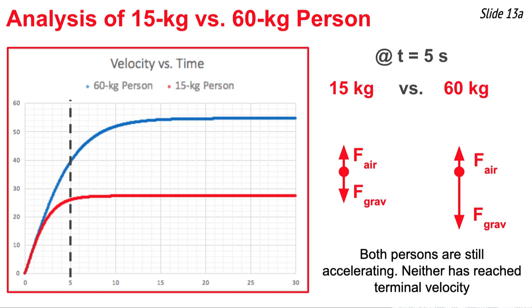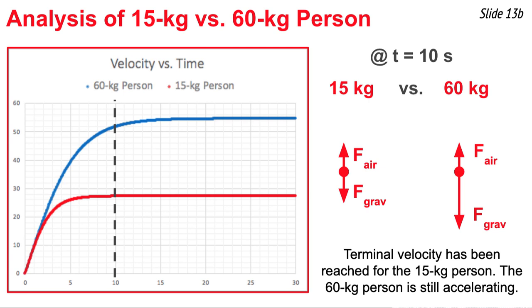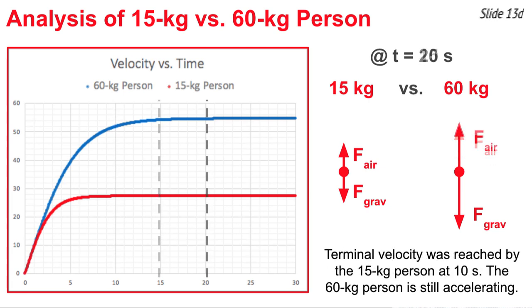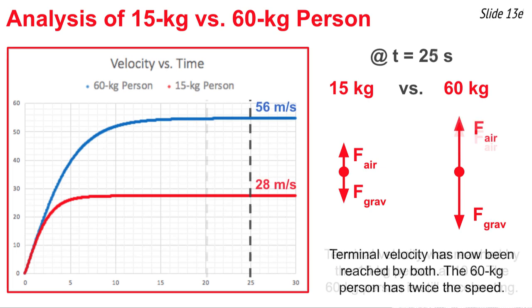This is a graph of velocity as a function of time for two skydivers. The red line represents the less massive 15 kg skydiver, the blue line the 60 kg skydiver. What we notice at 5 seconds is neither of these skydivers have reached terminal velocity. At 10 seconds, the least massive object finally reached terminal velocity, but the more massive object is still picking up speed. The same is true at 15 seconds, and at 20 seconds, and then finally at 25 seconds. Both of these skydivers have reached terminal velocity, but the more massive 60 kg skydiver has twice the terminal velocity as the 15 kg skydiver.